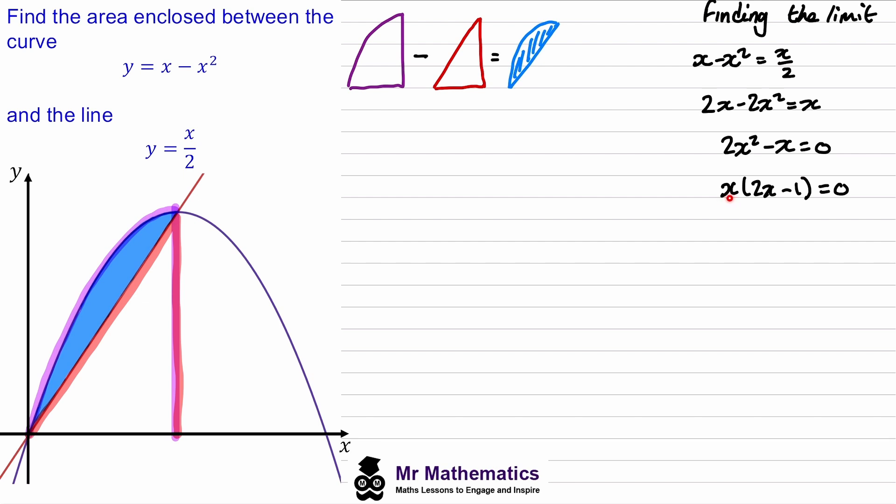We know the solution of 0 comes from this x and this is at the origin. So this limit will be when 2x minus 1 equals 0, and this will be when x is positive 1 half. I'll find this limit on our diagram.